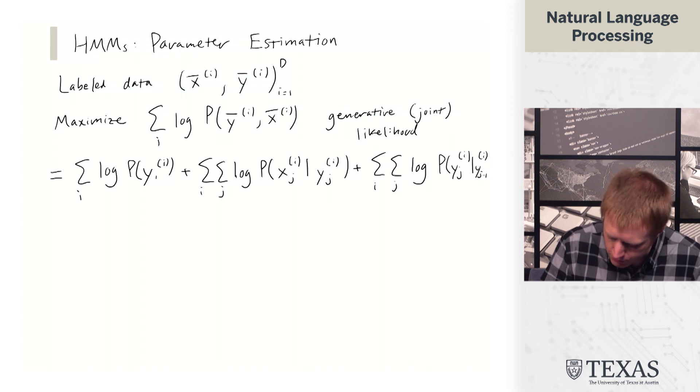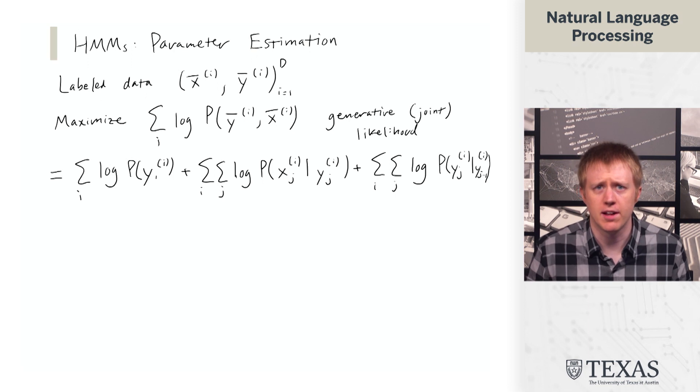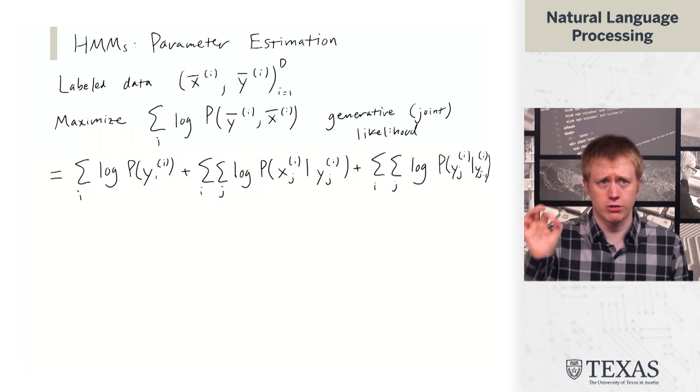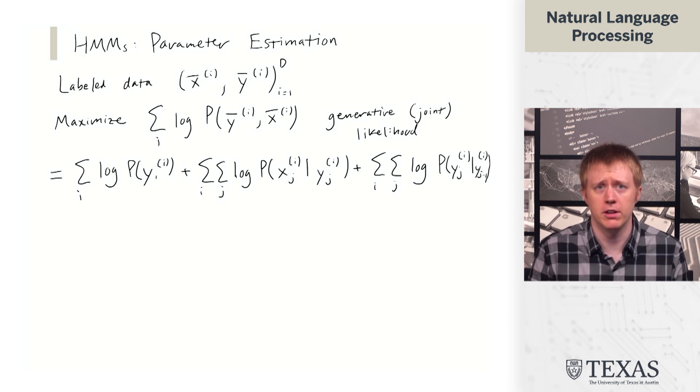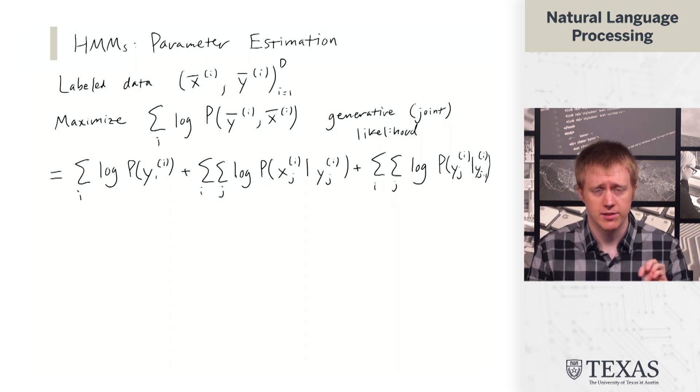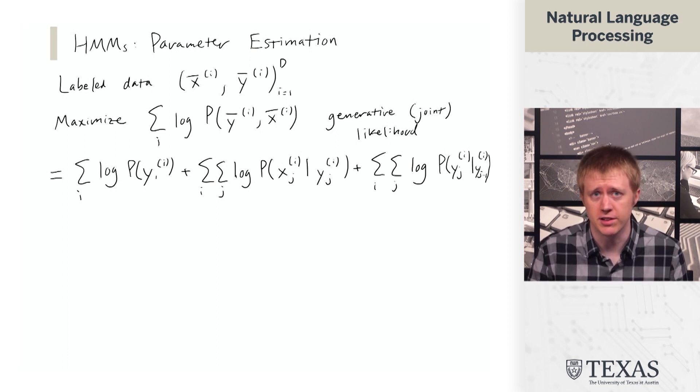I'm not going to get too precise here about the sums, but essentially the sums over i are sums over the training data. So if we consider this first term, we're thinking about the log probability of y_1 for each sequence i in the training data. And so that's a different y_1 for each sequence.